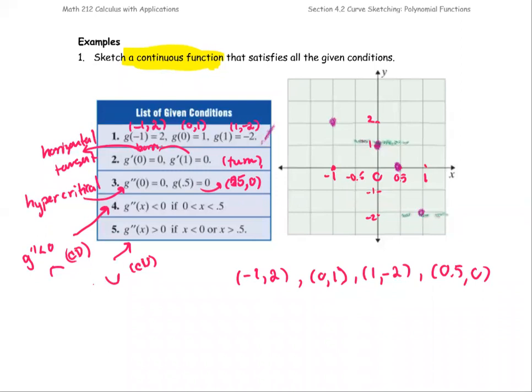And then g double prime at 0 equals 0. So that would be the point that the slope might change from one behavior to another behavior. We'll just leave it the way it is for now.